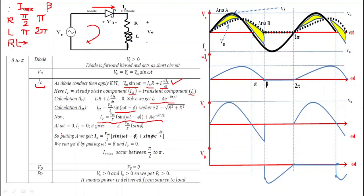At ωt = 0, we know that current is zero. Applying this initial condition, we get the constant A = (Vm/Z)·sin(φ)·e^(−R/L·t), giving us the full expression for the output current.